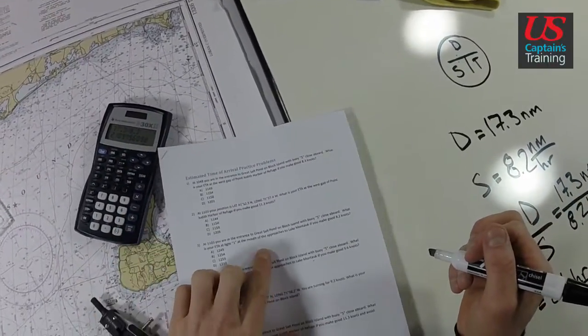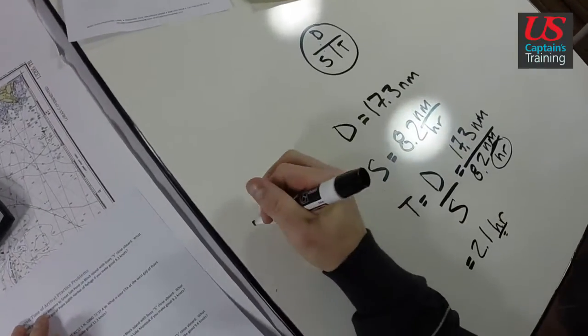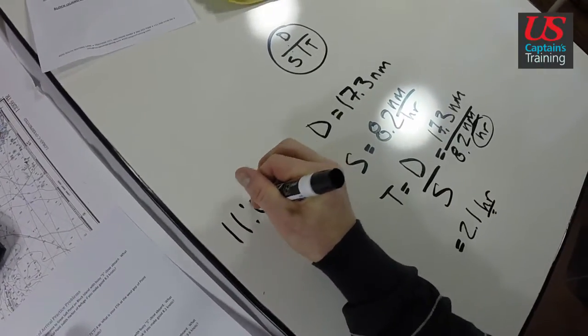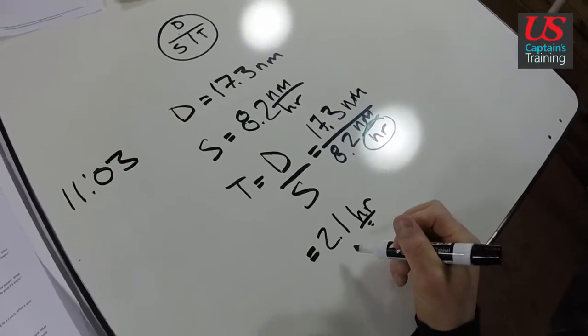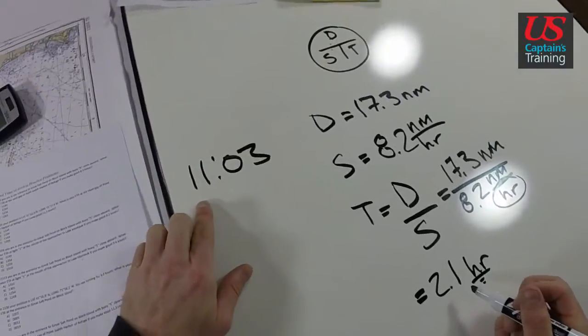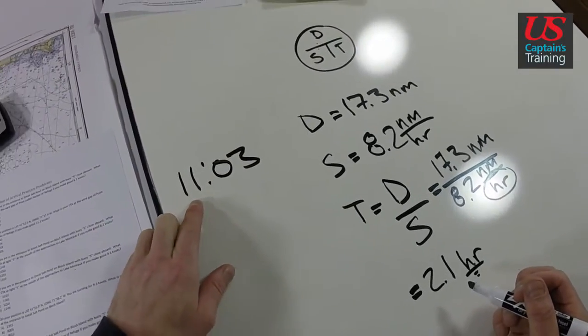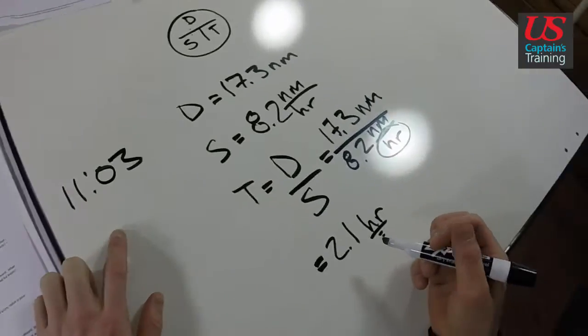So we're going to get our ETA. We left at 11:03. Now we can't add 2.1 hours to 11:03 - we'd get 13.1 hours and three minutes.